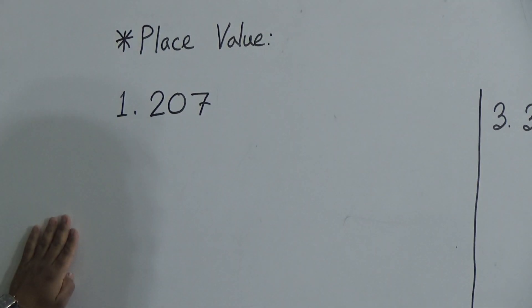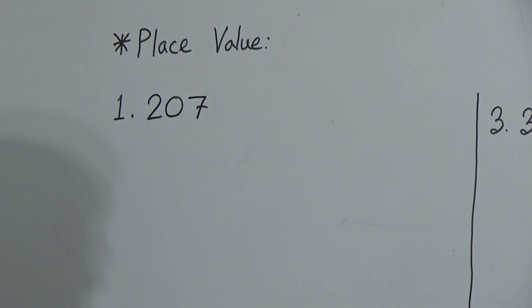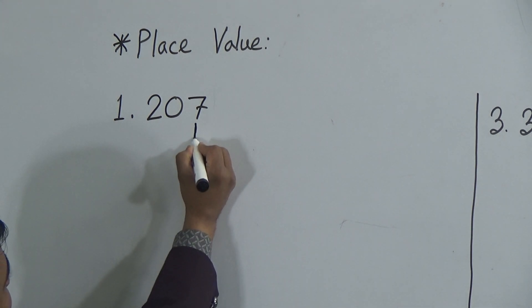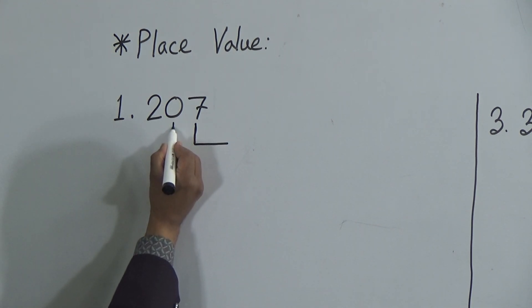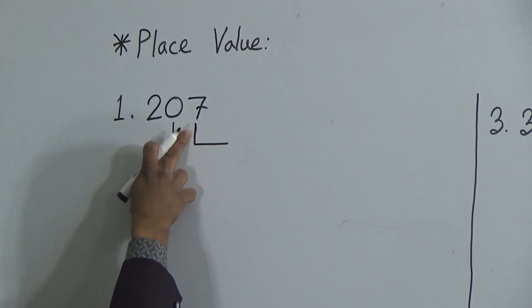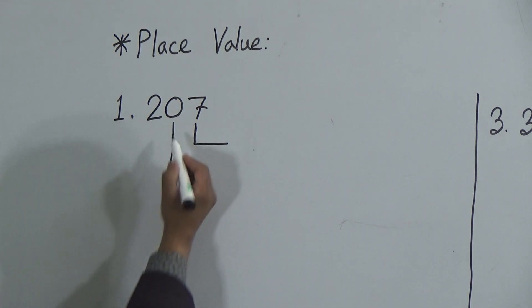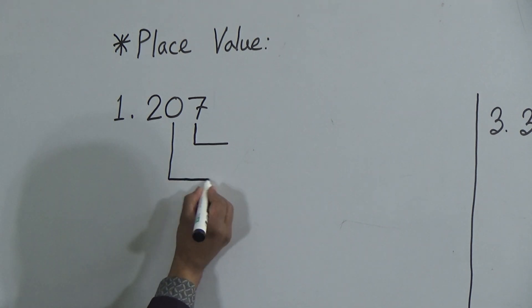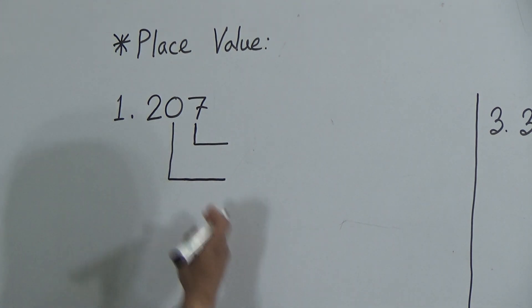My dear students, first of all, we need to look at this one very carefully. The first number is 207. To write down the place values, we will draw a horizontal line, then a vertical line here, and another longer line. Below 7, we draw a small line, but below 0, we will draw a longer line, equal to the first line.